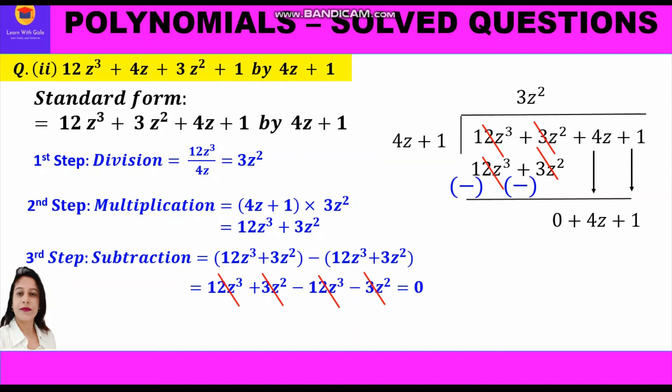What number should we multiply to 4z to get 4z? The answer is 1. Alternatively, using the first step — division: 4z divided by 4z is 1. So 1 is the new quotient obtained.